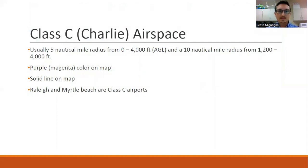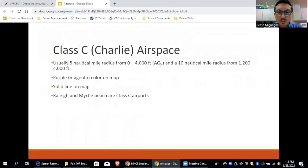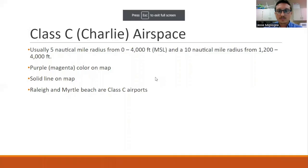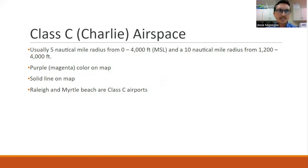Next is class Charlie airspace. Going down in busyness and significance, class Charlie usually has a five nautical mile radius from zero to 4,000 feet. This is something they do ask on the 107 — questions like 'what's the ceiling of class Charlie airspace?' — the answer is 4,000 feet MSL. The ceiling normally goes up to 4,000 feet MSL, though it can vary. They do ask what is the default ceiling of class Charlie airspace, and the answer is 4,000 feet MSL.